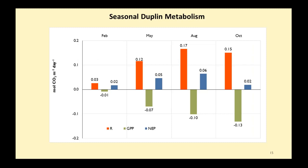Integrating through the entire Duplin, we have the total metabolism for each season. In August, respiration shown in red is highest. GPP shown in green is high in summer and fall. NEP shown in blue is always net heterotrophic — it's the net source of CO2.